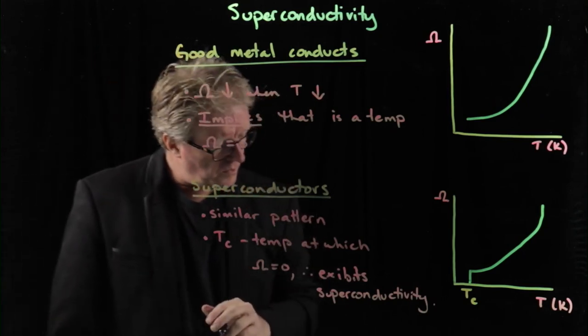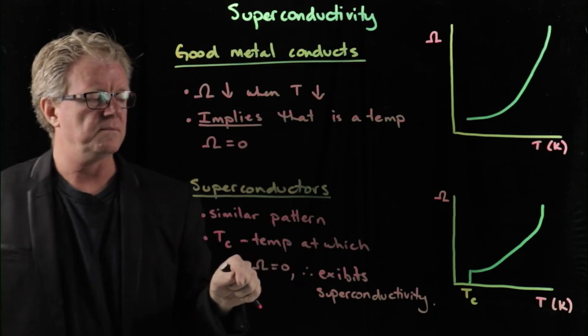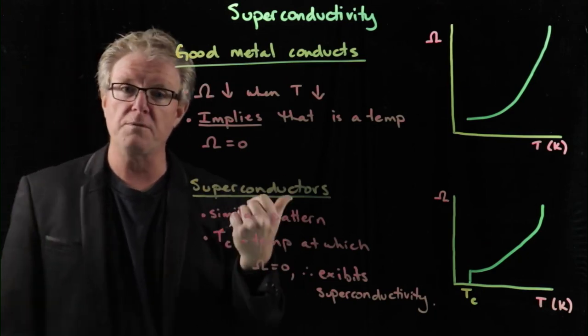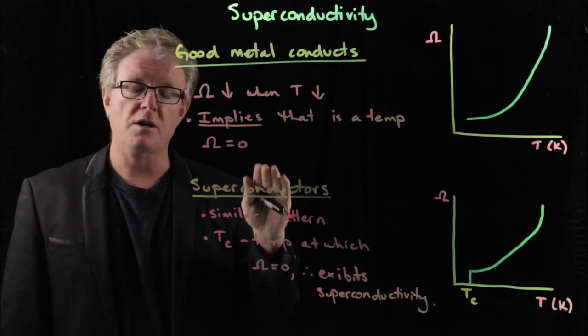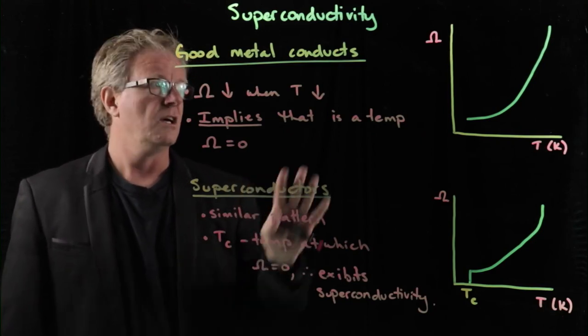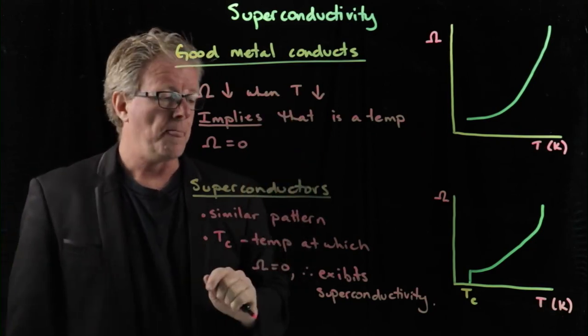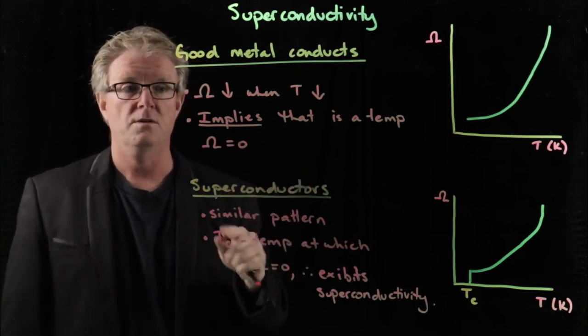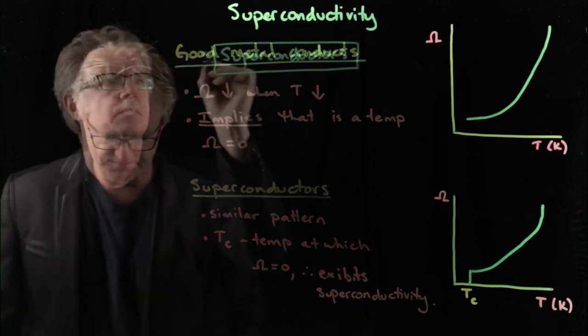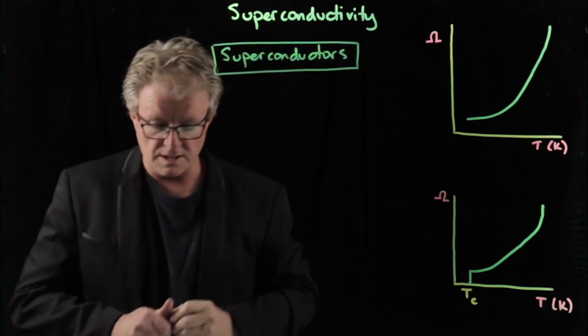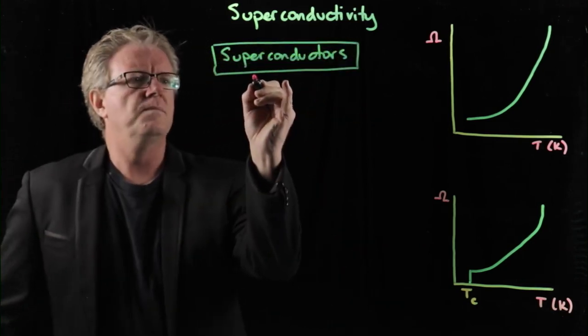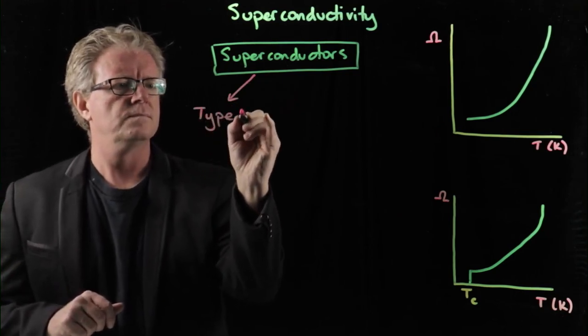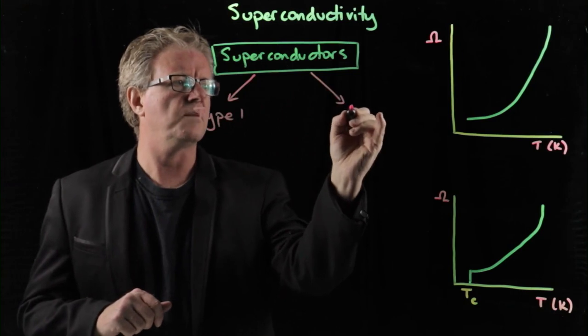And that is when we know that we have a superconductor when this happens. And we saw that just briefly before, which we're going to do again, and we're going to look at how and why that occurs. Let's look at the different types of superconductors, Type 1 and Type 2. There's two types of superconductors. The first one is known as Type 1, and the second is Type 2.